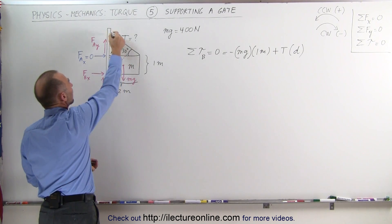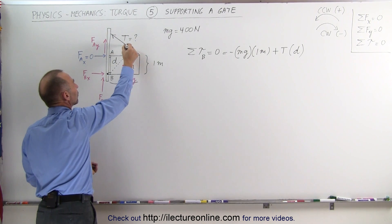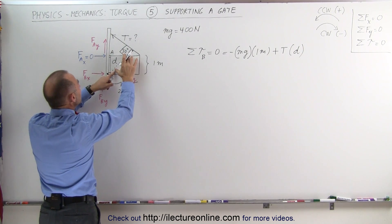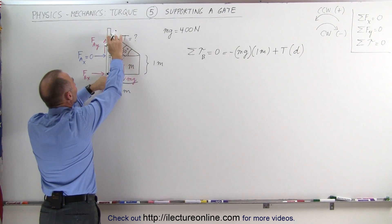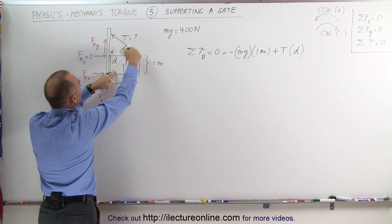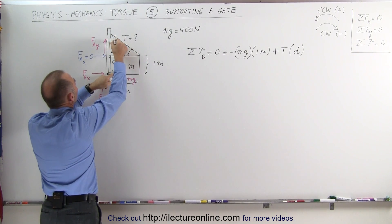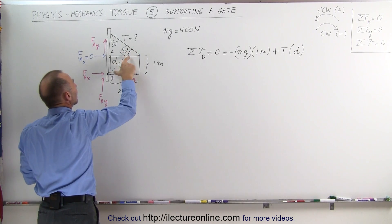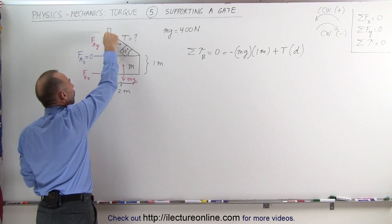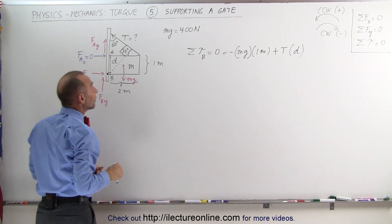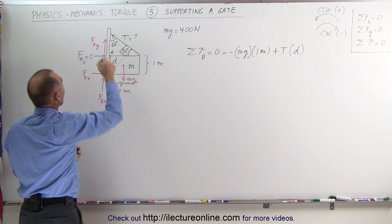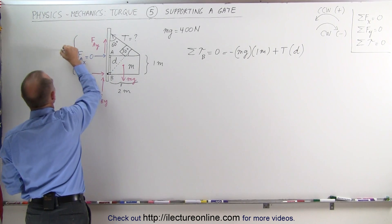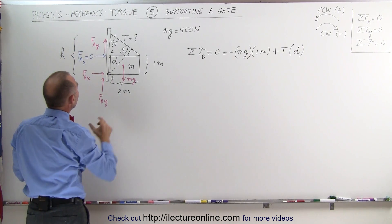I can find D by looking at this right triangle. The right angle is here, and D is the opposite side to the 60-degree angle. If the cable makes a 30-degree angle with the horizontal, this internal angle becomes 60 degrees. The post distance here is the hypotenuse. All we have to do now is find out what this vertical distance H is.